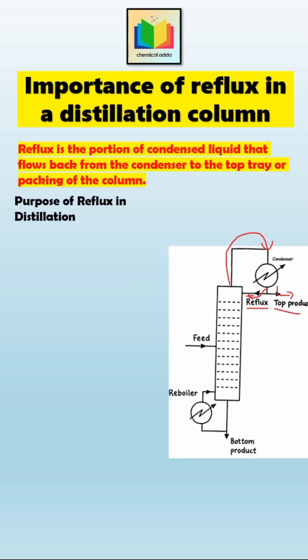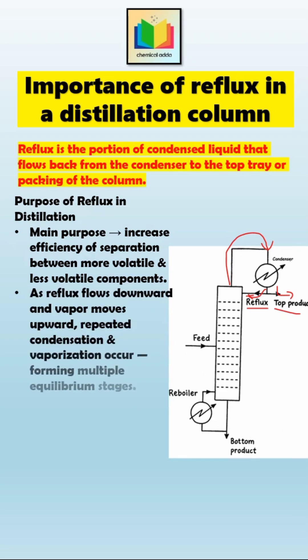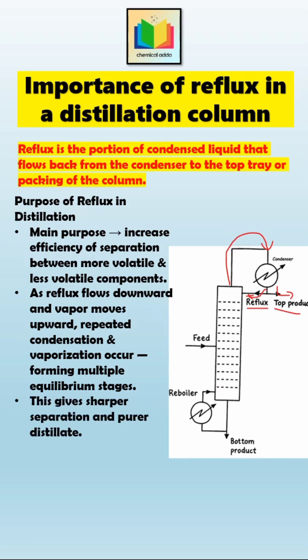What is the purpose of doing that? The main purpose of reflux is to increase the efficiency of separation between the more volatile and less volatile components. When reflux flows downward through the column and the vapor moves upward, they come into contact on each tray or within the packing material. This contact causes repeated condensation and vaporization at every stage, allowing the vapor to become richer in the more volatile, low boiling component, while the descending liquid becomes poorer in that component. Reflux helps to create multiple equilibrium stages inside the column, and this leads to a much sharper separation between the top and bottom products.